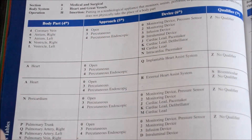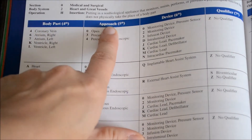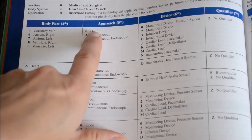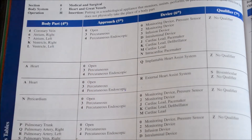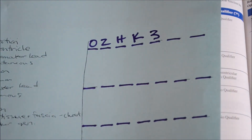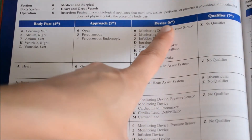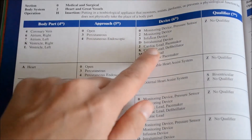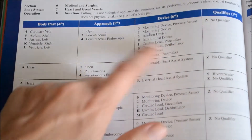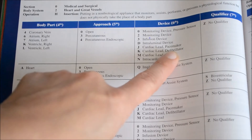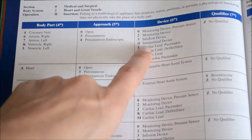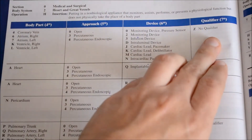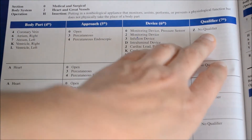From there we stay within this row to complete the rest of our code. We go to our approach character placement, the fifth, and we already found the approach was percutaneous — so we go down the list until we find percutaneous, which is a number 3. So far we have O2HK3. Then we go to our device column, the sixth character placement, and look for something about a pacemaker lead. We see cardiac lead pacemaker and cardiac lead defibrillator. We go with cardiac lead pacemaker since defibrillator did not come up in our report — that is a J.